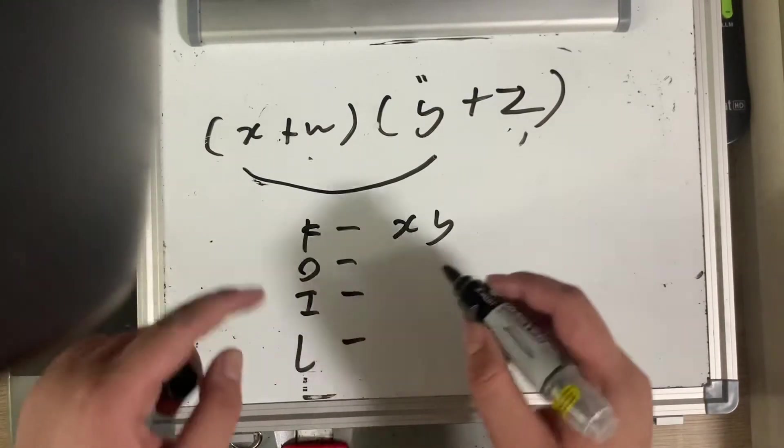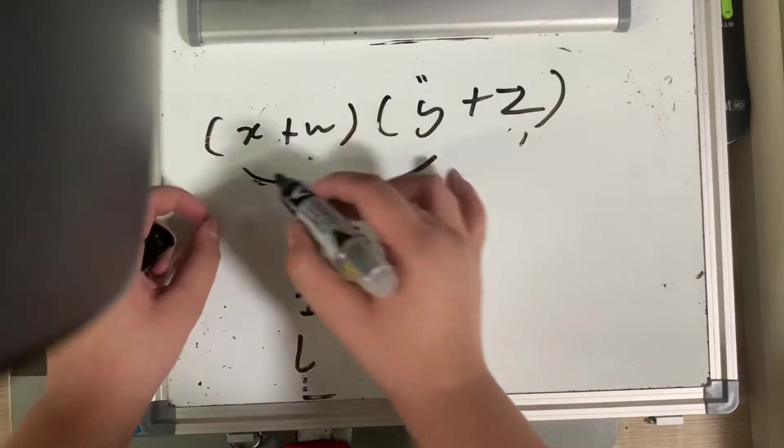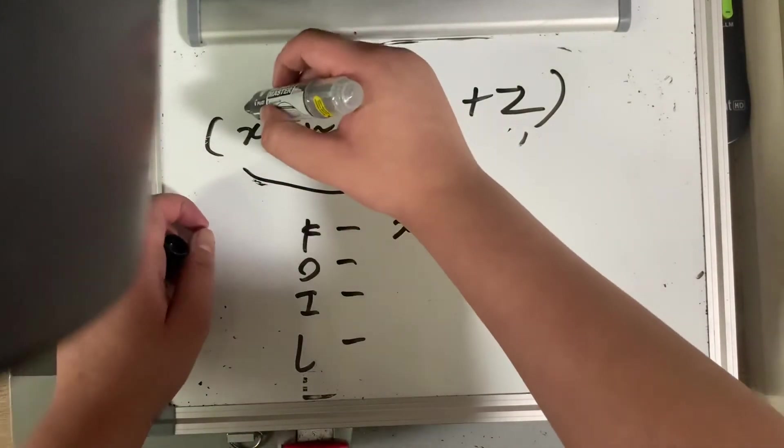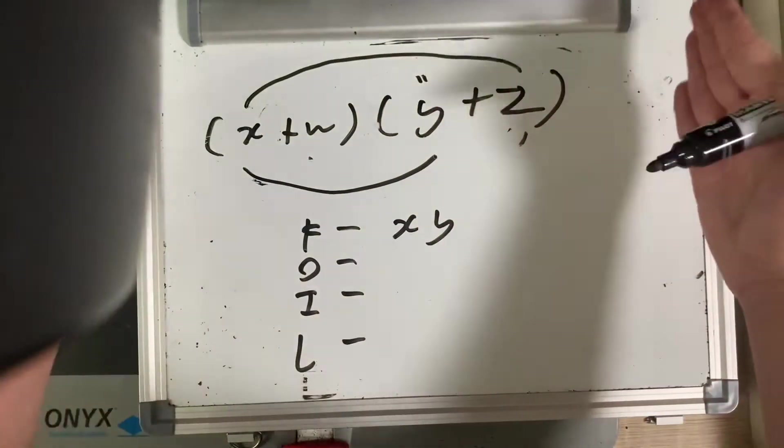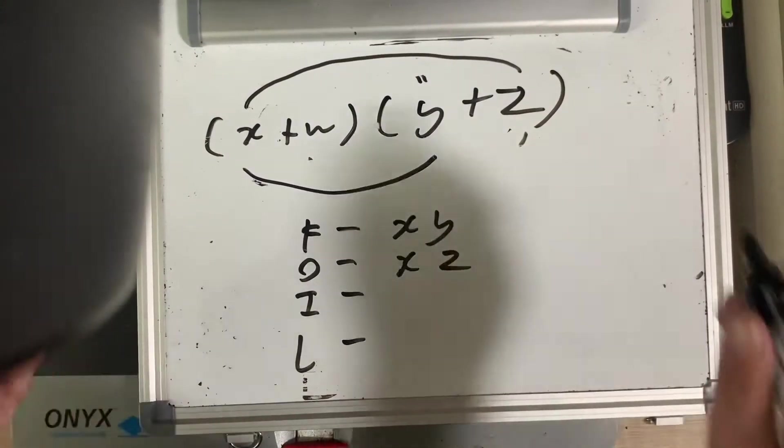Then, O stands for outer. I'm multiplying the outers. I multiply the two outer guys, x and z, are both outer guys because they're all in the outer section. It's going to be x times z.